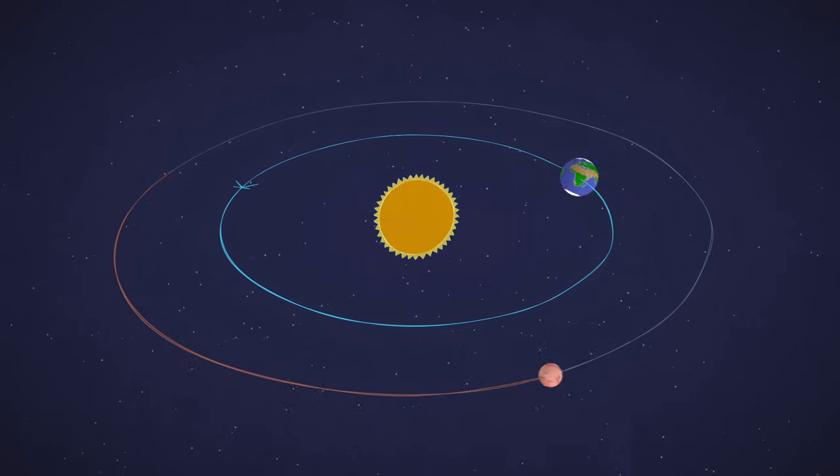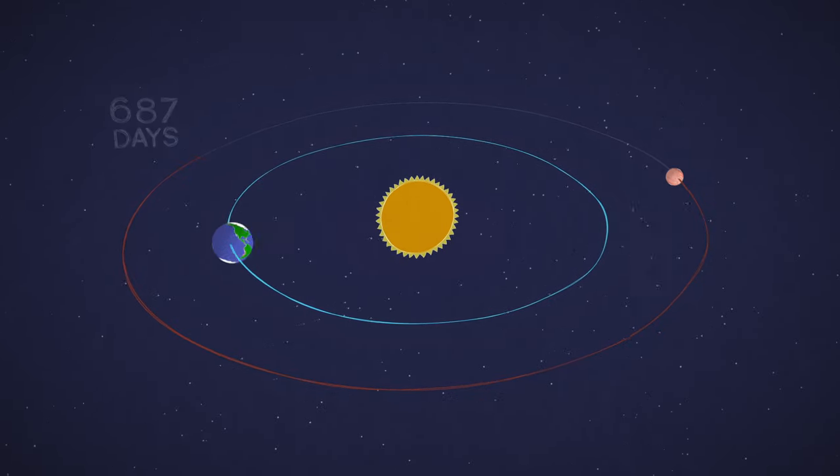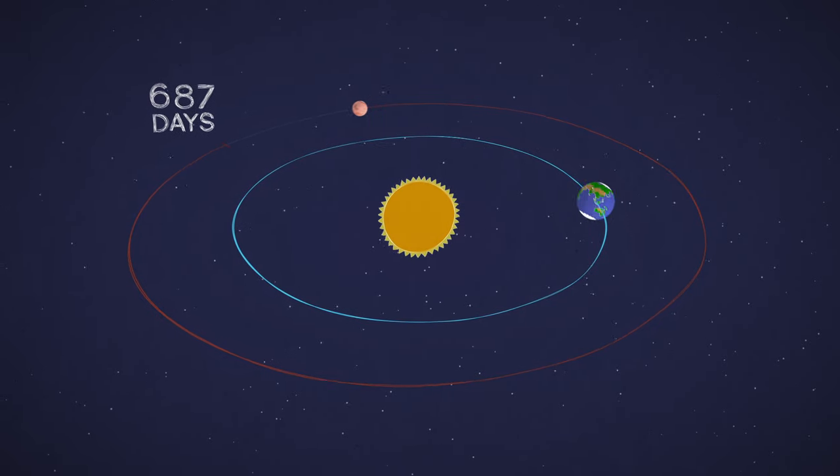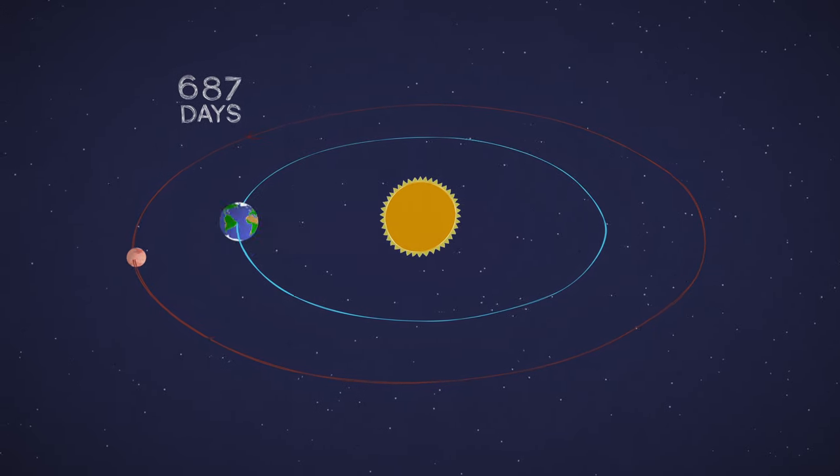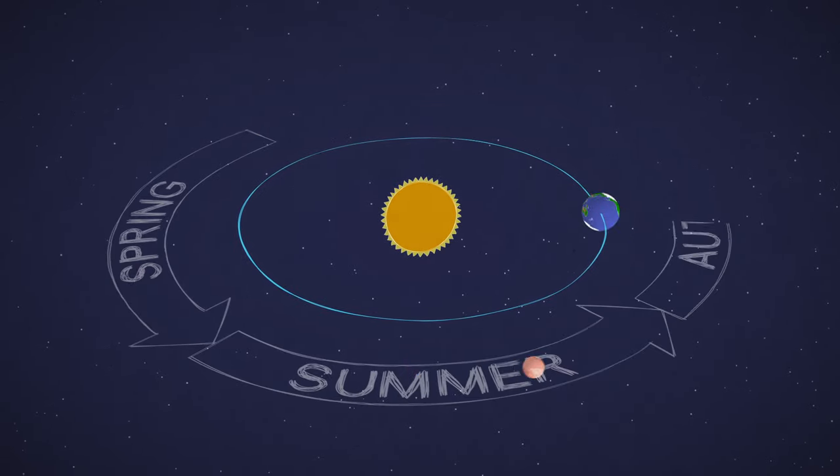Mars is a little slower and farther from the Sun, so a full circuit takes 687 Earth days, or one Mars year. That longer year means longer seasons, too.